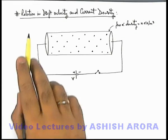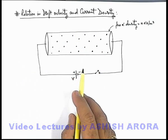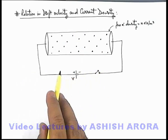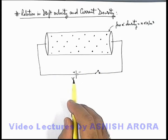Let us discuss the relation between drift velocity and current density of a conductor. Here is a setup in which we can see a cylindrical conductor is connected via battery.